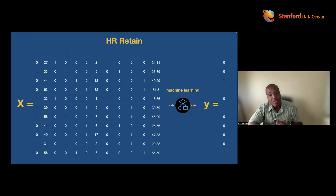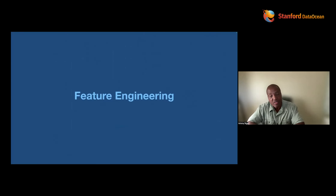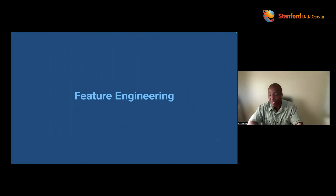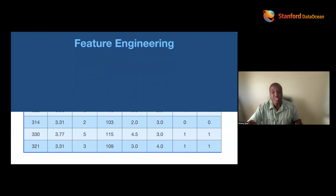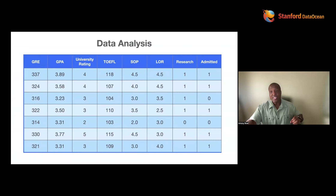It's called feature engineering. To improve your machine learning model, there are two things you can do: either get more data — more examples of the world — or get better features. Get in there and tell the machine better things about the world. That's the art of machine learning, the creativity of it.